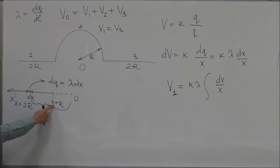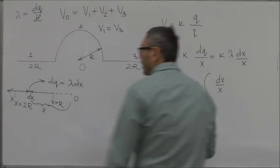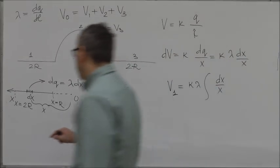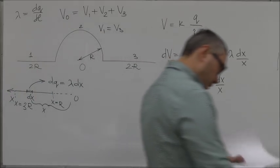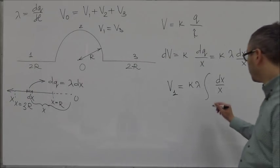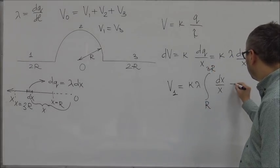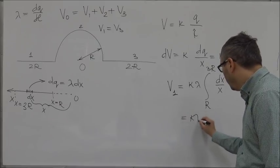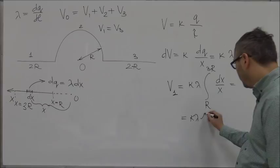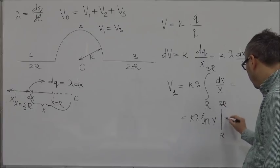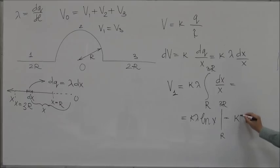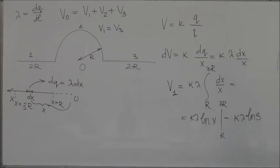Integrating from R to 3R, this becomes k·lambda times the integral of dx/x, which is a natural log. Evaluating log(x) from R to 3R gives k·lambda times (log(3R) minus log(R)), which simplifies to k·lambda·ln(3). This was V1, and similarly V3 equals the same value since V1 and V3 are identical.